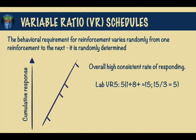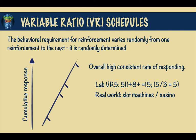In the real world, a variable ratio is precisely the type of schedule designed into a casino slot machine, in that it is programmed to provide a winner on average every nth response — such as every 75th time a game is played. So the slot machine may give a winner on the first pull, then the 30th, and then the 125th or so. But on average, it works out to be every 75th pull.